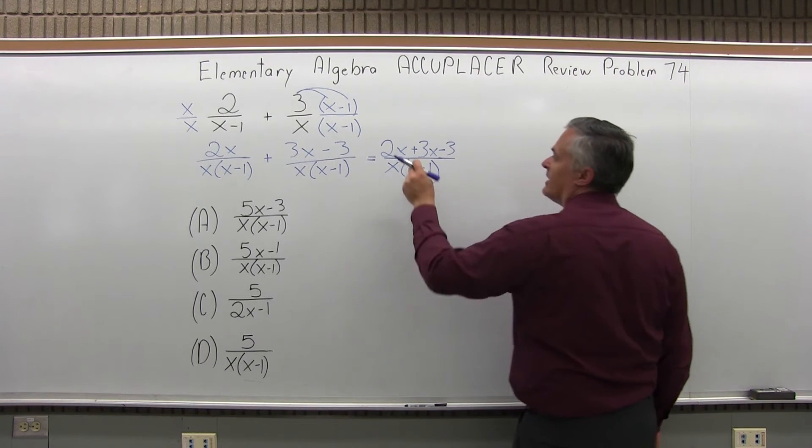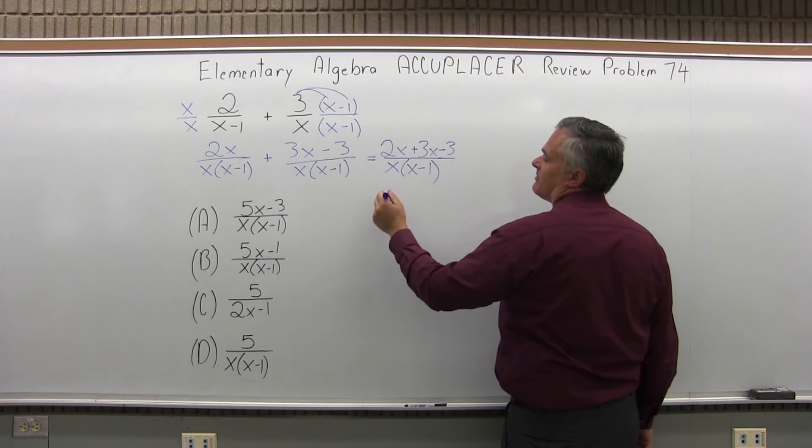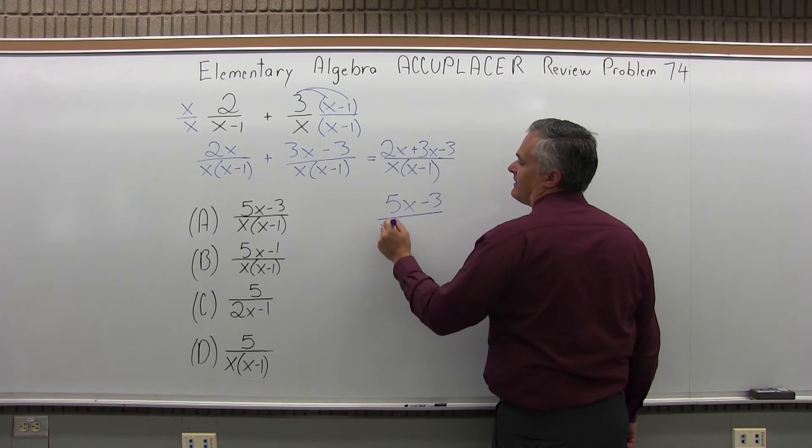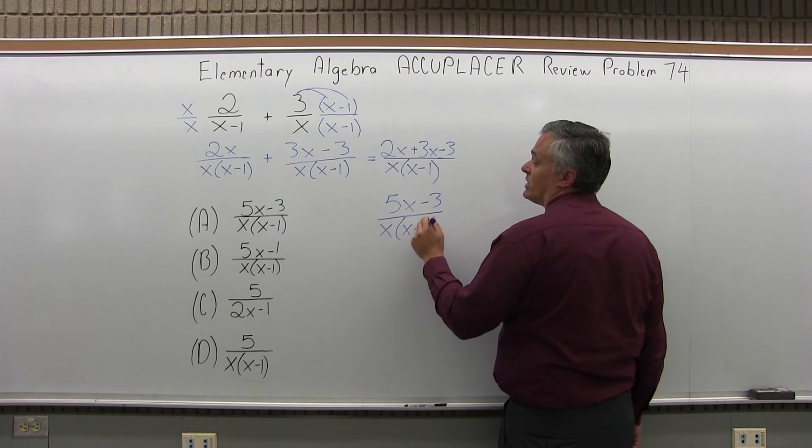And now I can simplify that. 2x and 3x, I can make that a 5x. Then don't forget the minus 3 on the end. And I have x times x minus 1 in the denominator.